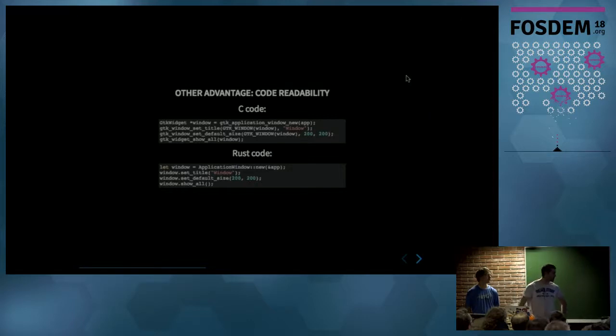So yeah, another advantage, of course, is the code readability. So in C, very verbose. In Rust, a bit less. It's the advantage of object-oriented languages. Much better to say in here.